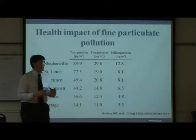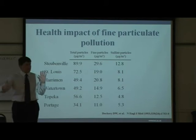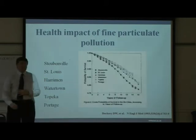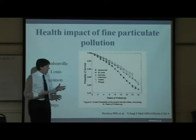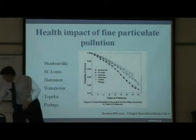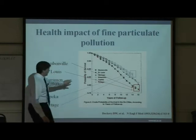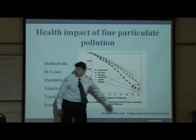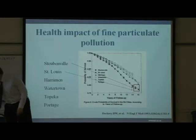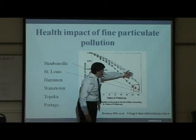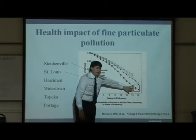What they looked at was the probability of dying over that 16-year period. Looking at survival curves, the cleanest cities showed the highest probability of survival, while the dirtiest cities — Steubenville — showed survival way down compared with the cleanest cities. The chances of dying prematurely were much higher in the industrial cities in the States over this period than in the more rural locations.